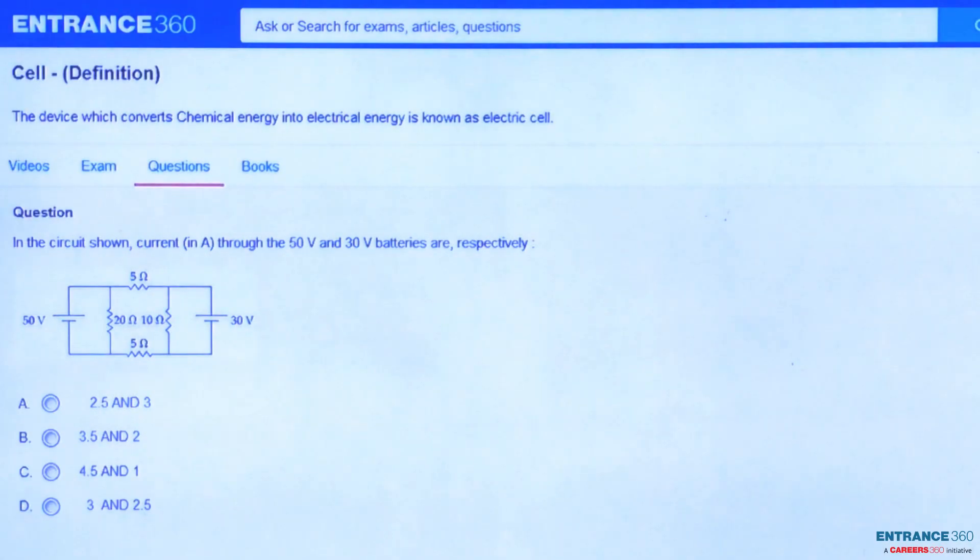Hello everyone, let's discuss a question from JEE MAIN 2014 from the chapter current electricity. The question says that in the circuit shown, current through the 50 volt and 30 volt batteries are respectively. These are our options.